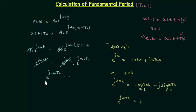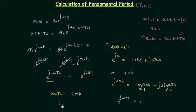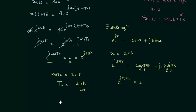So we can write e^(jω0·t0) equal to e^(j·2πk), because both are equal to 1. On comparison we can see that ω0·t0 is equal to 2πk, or we can say t0 is equal to 2πk divided by ω0. If k is equal to 1, the fundamental time period t0 is equal to 2π divided by ω0.